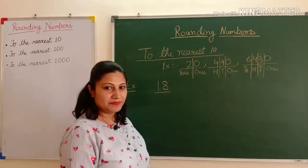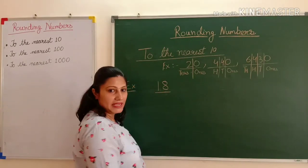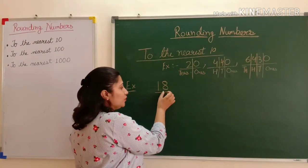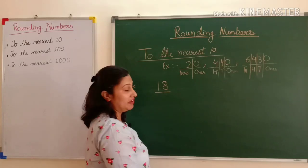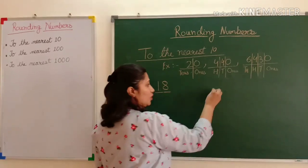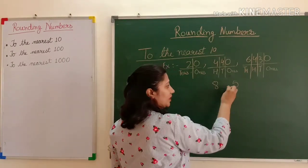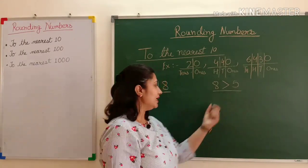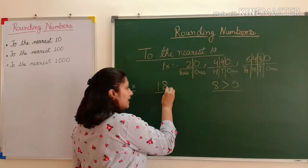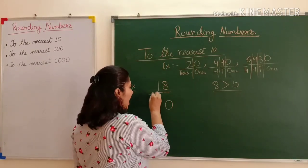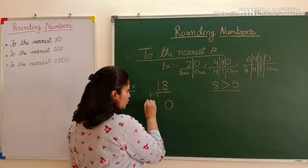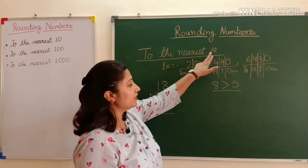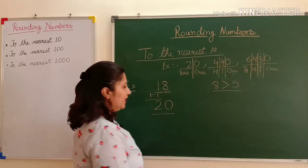Let's take an example: the number 18. In 18, the ones place digit is 8. To round off to the nearest ten, we compare the ones place digit with 5. Here, 8 is greater than 5. When the ones place digit is greater than 5, you write zero in the ones place and add one to the tens place. So you get 20. When I round off 18 to the nearest ten, the answer is 20.